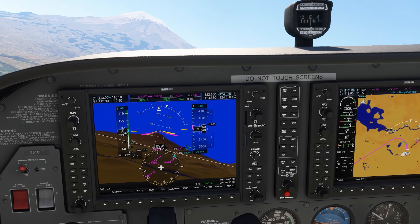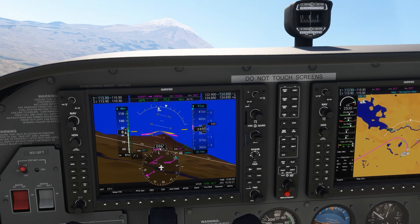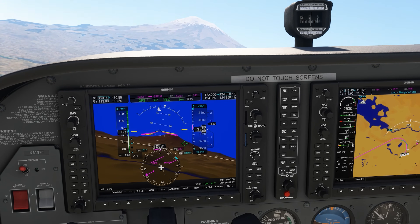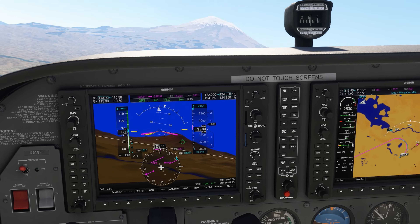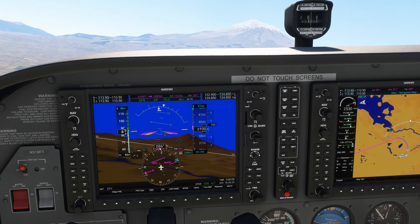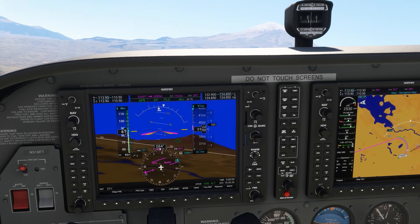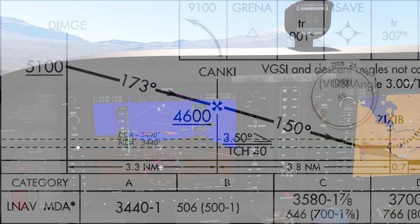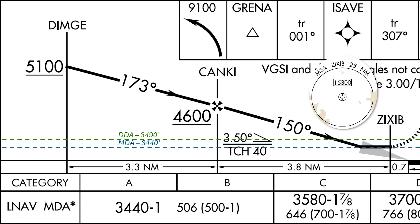Even if we've been climbing since deciding to go missed — if you're not on a published segment of the approach, and turning before ZIGZIB takes us off the final approach segment, you're subject to the minimum safe altitude for the approach, which is 15,300. We're well below that, and that's for emergency use only anyways.